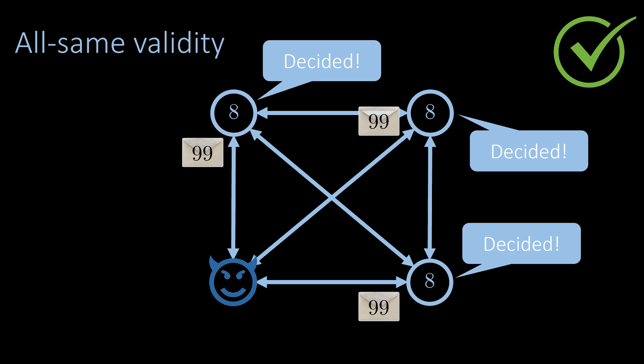Note that there are other validity conditions that can be useful. For example, if we can order the values, it is also possible to agree on a value that is close to the median of all values.